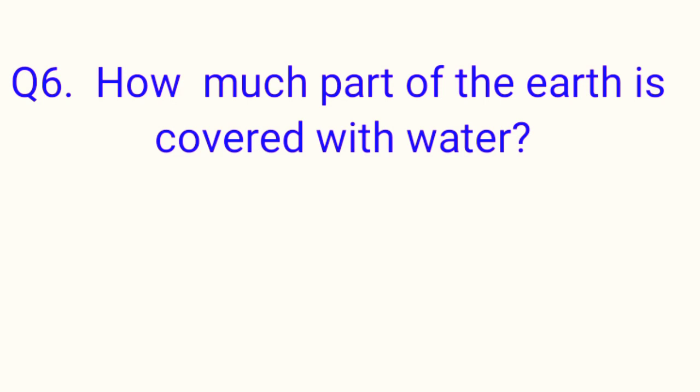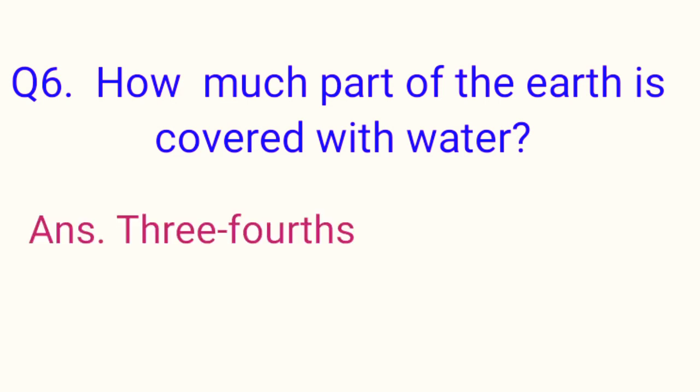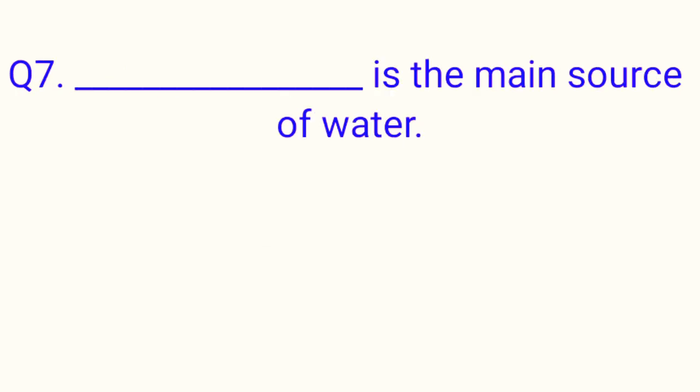Question number six: How much part of the earth is covered with water? Answer is three-fourths. Question number seven: Dash is the main source of water. Answer is rain.